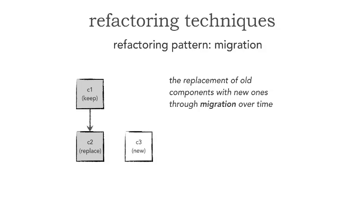What we do is put C3 out there and point component 1 over to C3 through some switching logic. C3 is not doing anything initially, but as we start to slowly migrate functionality iteratively over time, we start pointing C1 over to C3 for that new functionality. And over time, we continue to migrate functionality from C2 over to C3 — hence the name migration — until we're finally done.